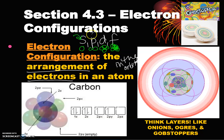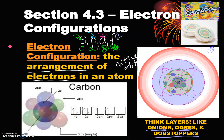As soon as one layer fills up, another layer comes in, and that layer fills in a very specific order. Think of onions, ogres like Shrek, or gobstoppers. If you break apart an everlasting gobstopper, it has a nucleus in the center and then layers of s orbitals — these spherical three-dimensional things — and our electrons can be anywhere inside of them.